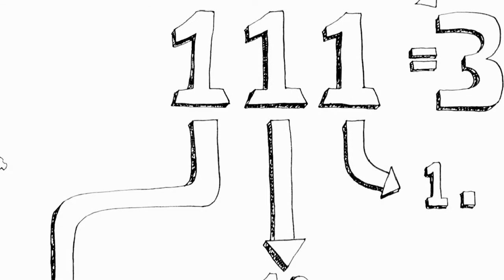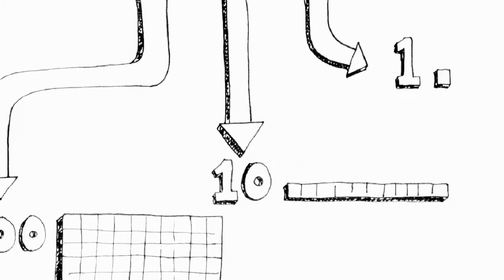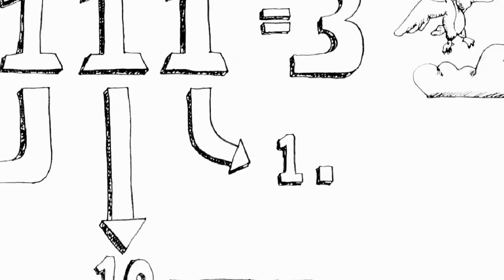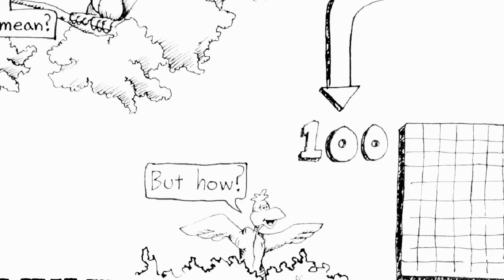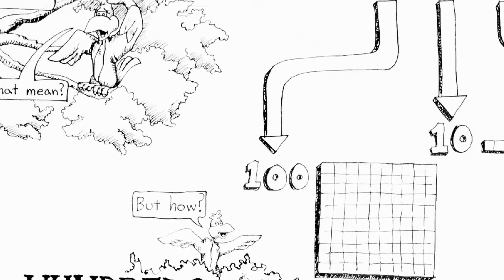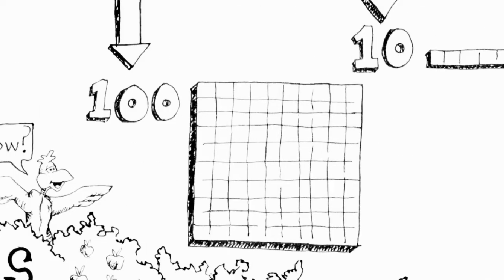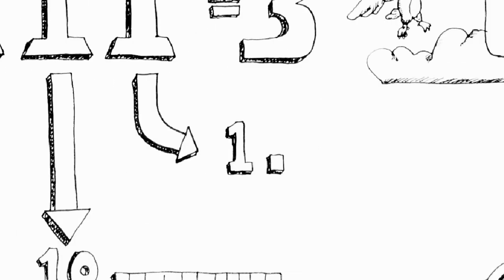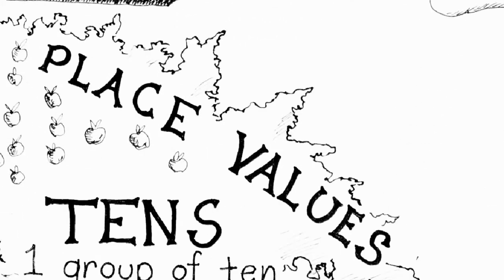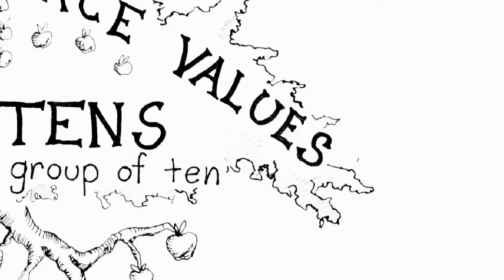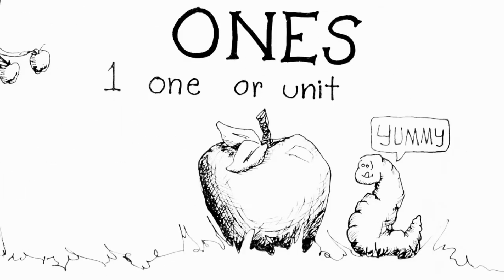The one in the middle is actually equal to 10, and the one on the right is equal to one. You might be thinking: how could that be? We write one exactly the same way, but one time it's equal to 100, another time it's equal to 10, and another time it's equal to one. Well, it's because of place value. We have something called place value columns — these are the special places we can put numbers, and when we put numbers in those places their values change. There's a very easy pattern to remember how they change.